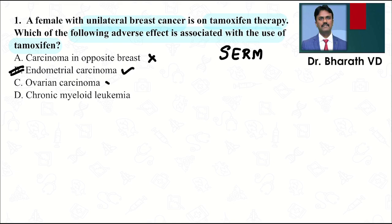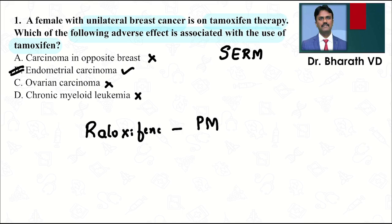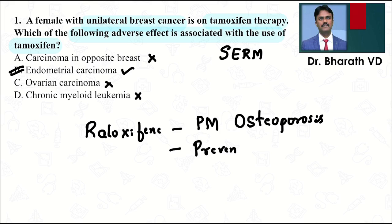Another SERM is raloxifene. Raloxifene is mainly used to manage post-menopausal osteoporosis and also in people with a high risk of breast cancer — it is used to prevent breast cancer in high-risk individuals, such as those with a family history.